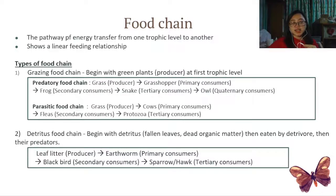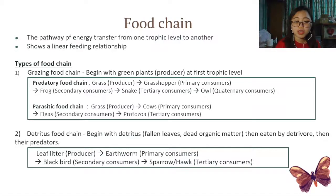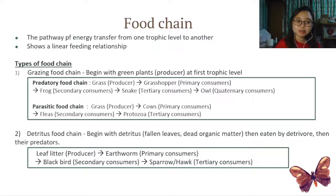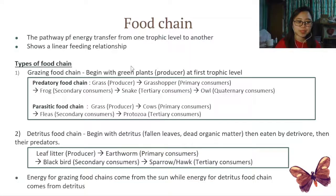Now let's look at the detritus food chain. In this example, we start with the detritus of leaf litter — fallen leaves. The leaf litter is eaten by an earthworm, which is the primary consumer. The earthworm will be eaten by a blackbird, the secondary consumer. The blackbird will be eaten by a sparrow or a hawk, the tertiary consumer. The energy for grazing food chains comes from the sun, while the energy for detritus food chains comes from detritus.